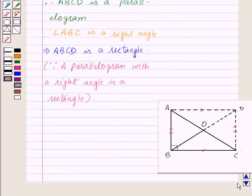Now we know that the diagonals of a rectangle are equal and bisect each other. Therefore we can say that AC and BD are equal and bisect each other.